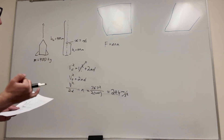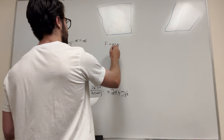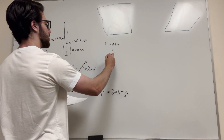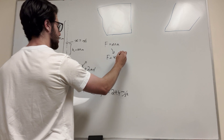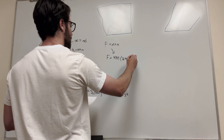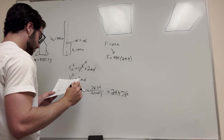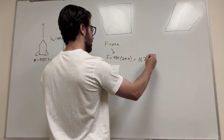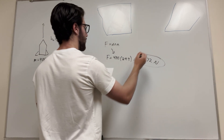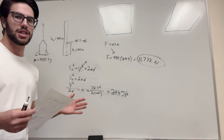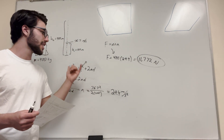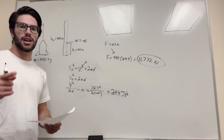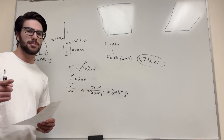Now we have the acceleration and we have the mass, so we just use our F = ma formula. Mass is 400 kg, so force equals 400 kilograms times 29.4 meters per second squared, which gives you 11,772 newtons. That's the final answer — that's how much force it takes to accelerate this rocket 100 meters off the ground at that pace. That's how you do this kind of problem. Good luck with your physics, guys. Stick around if you need some more problems, and I'll see you next time.